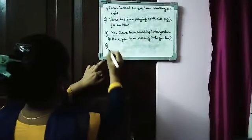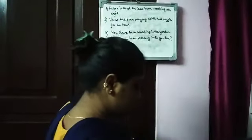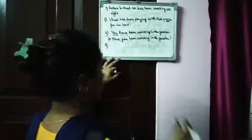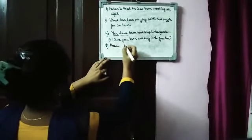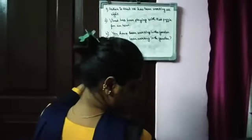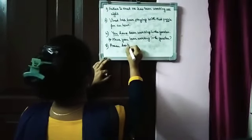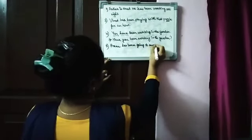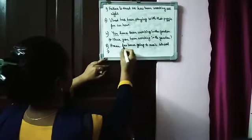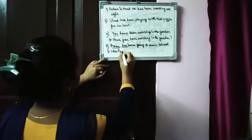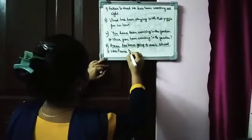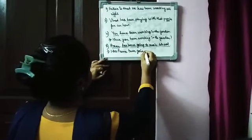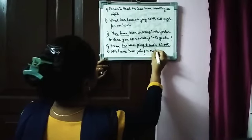Last one I'll show you - number five. You have to make the question here. Prem goes to music school. Prem has been going to music school. Now we'll question this. First of all, auxiliary: has. Then our subject: Prem. Then the remaining: been going to music school. Question mark.